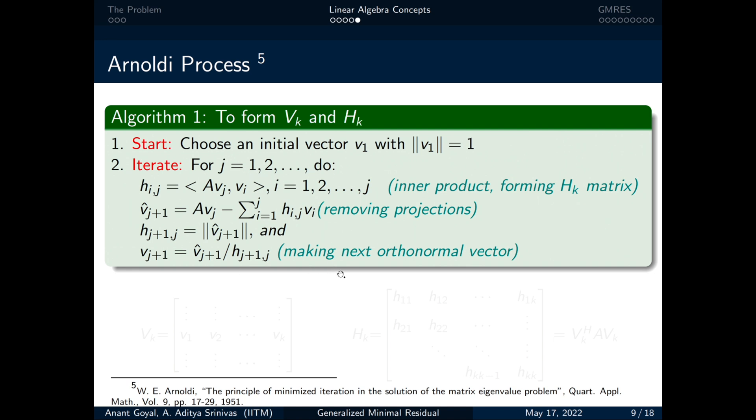After this process is completed, we will be ending up with two different matrices and very important matrices, those are the vₖ and hₖ. vₖ is the matrix which contains the basis vectors for the Krylov subspace. hₖ is the upper Hessenberg matrix. Upper Hessenberg matrix is a special type of triangular matrix where the elements below the first sub diagonal are zero. As we can see,